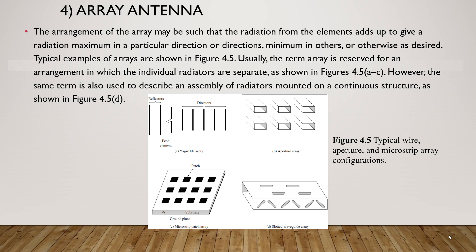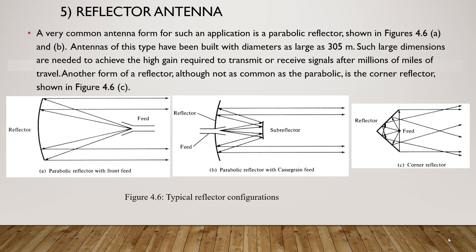Usually the term array is reserved for arrangements in which the individual radiators are separate, as shown in figure 4.5 A to C. However, the same term is also used to describe an assembly of radiators mounted on a continuous structure, as shown in figure 4.5 D. A very common antenna form for high-gain applications is the parabolic reflector shown in figure 4.6 A and B. Antennas of this type have been built with diameters as large as 305 meters to achieve very high gain required to transmit or receive signals after millions of miles of travel. Another form of reflector, although not as common as parabolic, is the corner reflector as shown in figure 4.6 C.